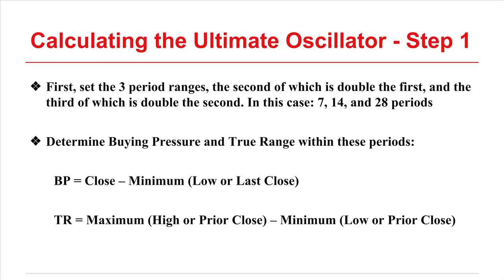I want to give a quick outline of how to calculate the Ultimate Oscillator and the weighting scheme that results in its values. First of all, you need to set three period ranges, the second of which has to be double the first, and the third is double the second value — in this case, 7, 14, and 28 for the three ranges.